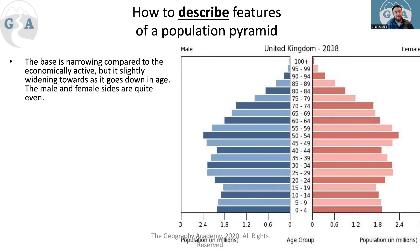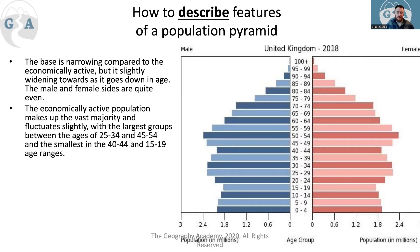Looking at this pyramid, the base is narrowing compared to the economically active section, but slightly widening as it goes down in age. The male and female sides are quite even. A better description would be: the economically active population makes up a vast majority and fluctuates slightly - referring to those areas where it goes in and out.